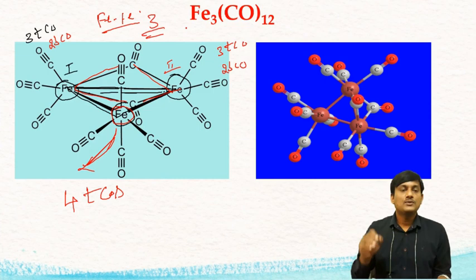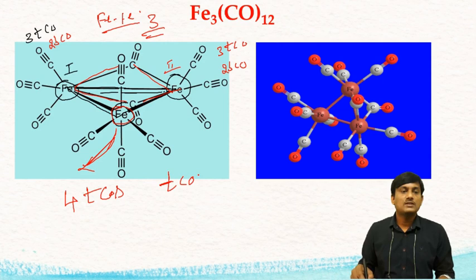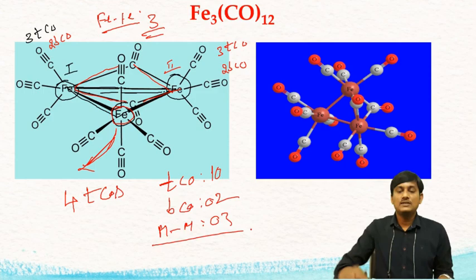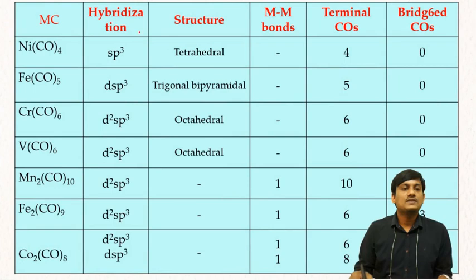So for the whole structure of Fe₃CO₁₂: the terminal COs are 3 + 3 + 4 = 10, the bridged COs are 2, and there are 3 metal-metal bonds.